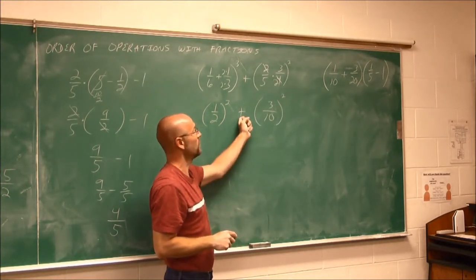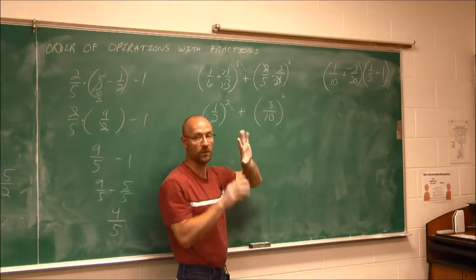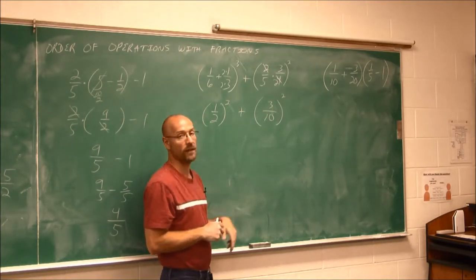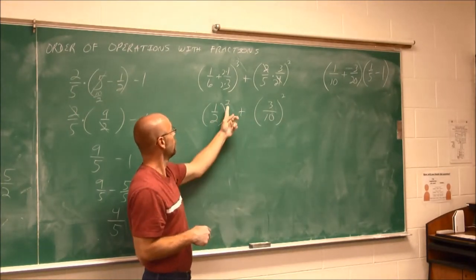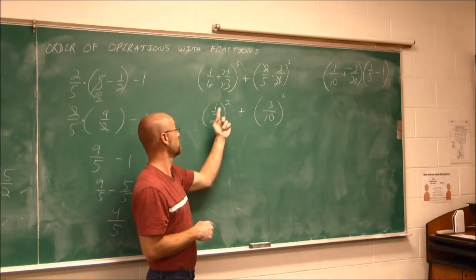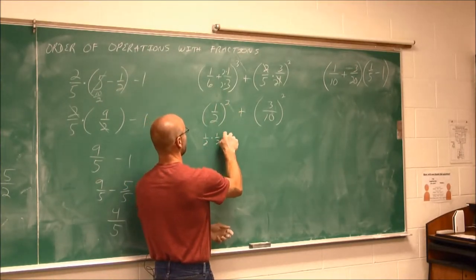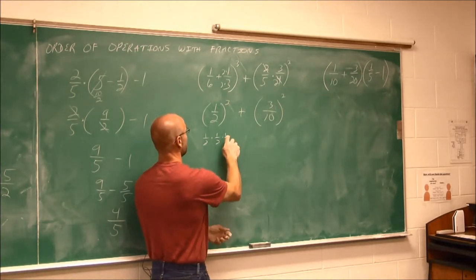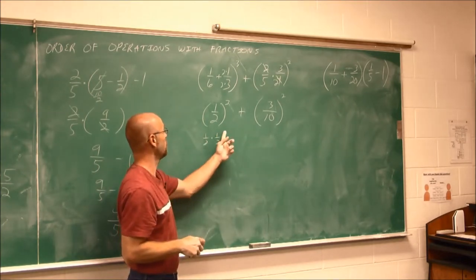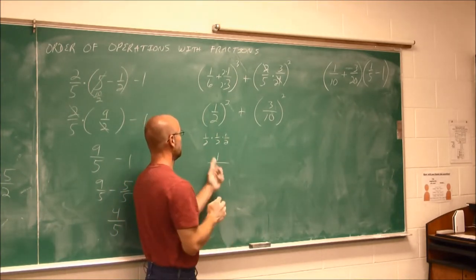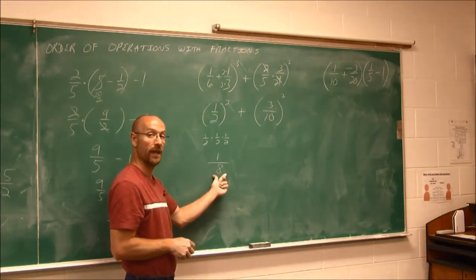We do exponents before we do addition or subtraction. So let's move on to that next. We've dealt with the grouping symbols. There's nothing more I can do within those grouping symbols. So we move to exponents. To the third power means I'm going to take this factor of 1 half and multiply it by 1 half so that I have three factors of 1 half. 1 times 1 times 1 is 1. 2 times 2 times 2 is 8. 2 times 2 is 4, times 2 again is 8.